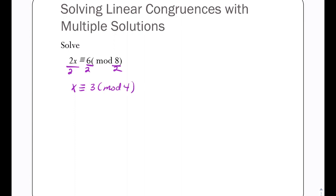So we started with a congruence mod 8, we now have a congruence mod 4. That's one solution and I said there were 2. Whatever the greatest common divisor is, that's how many solutions. And here's how you get them.